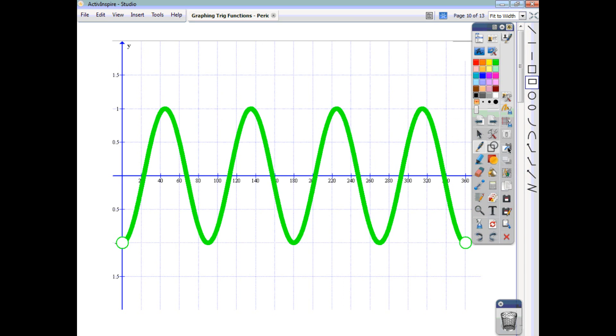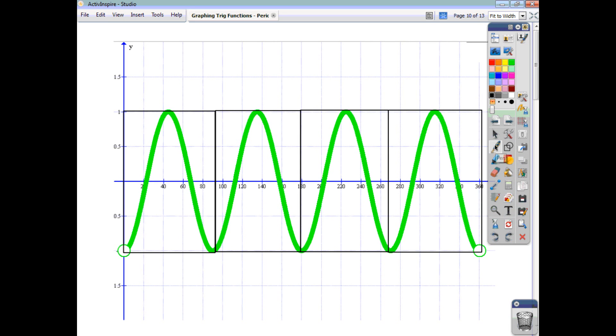How about this one? Let's again try and identify the non-repeating part of the graph. There's 1, 2, 3, and 4 of these in 360 degrees. So, what can we say? Well, what does that look like? Well, that's an upside-down cosine cycle.